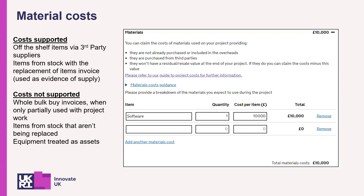Enter and describe what materials you intend to use on the project, the volume and the cost. Any items which you would usually depreciate, as per your company's policy, should be listed in capital usage. Materials supplied by associated companies or subcontracted from other consortium members must be listed at cost, excluding any profit element or margin.